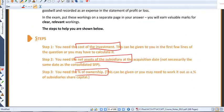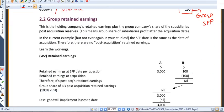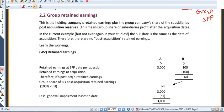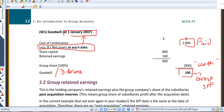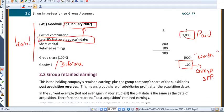And for this, we need to show you a second working, retained earnings. Now, both of the workings that we're looking at here, working one for goodwill, and working two, the one we're about to see, retained earnings,